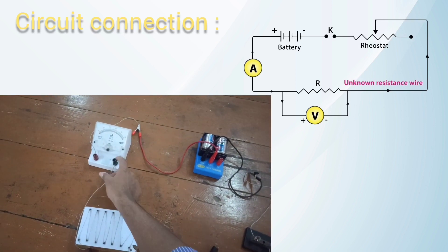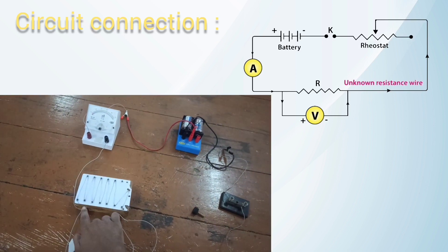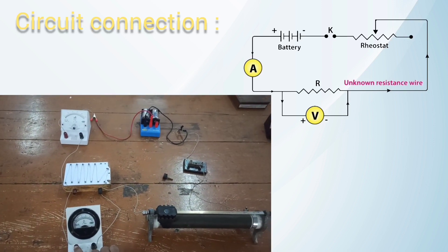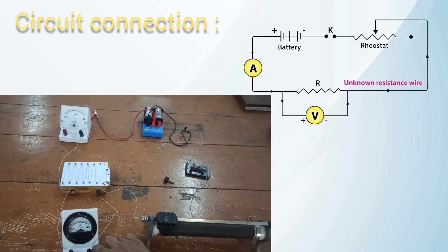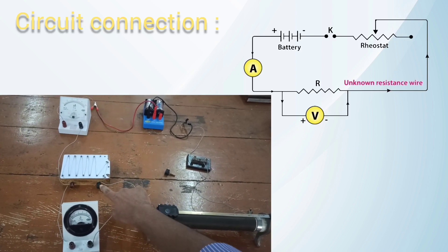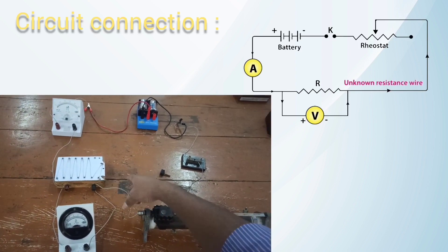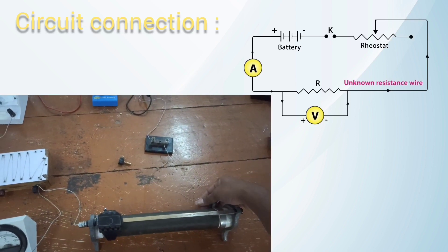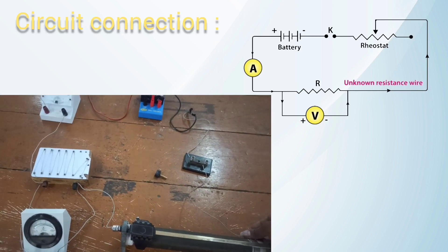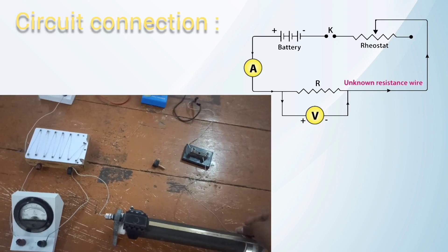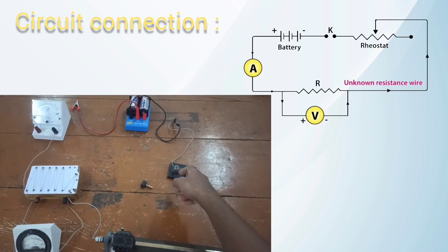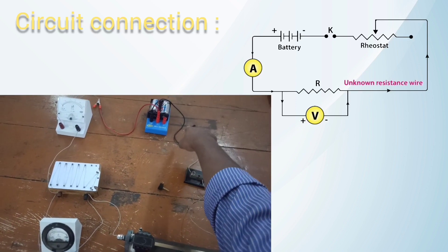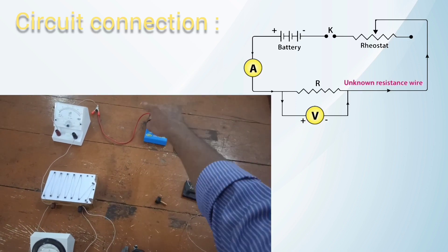From the milliammeter negative to one end of the resistor. From that resistor end to the voltmeter positive, and from the voltmeter negative to the other end of the resistor. From the resistor to the rheostat upper end, then from the rheostat lower end to one side of the key. The other side of the key is connected to the battery negative, completing the circuit.